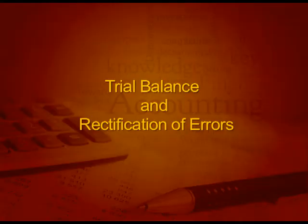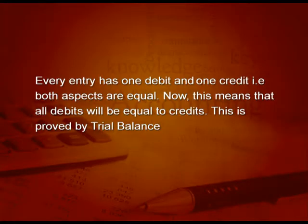Welcome, dear students. Today we are going to start a very important chapter 6 — Trial Balance and Rectification of Errors. Till now we have studied that every entry has one debit and one credit aspect and both these aspects are equal. This means that all the debits will be equal to credits, and this is proved by the trial balance.